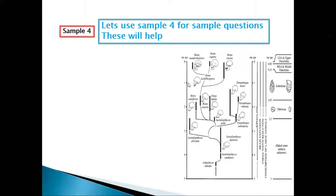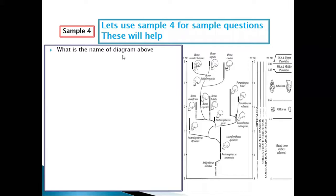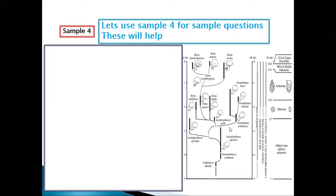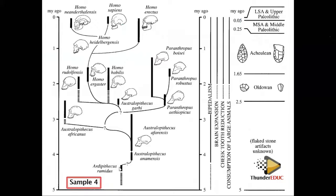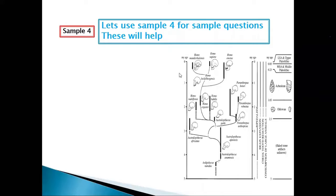Now let's look at the questions. What is the name of the diagram? — Phylogenetic tree. How many genera are shown? Ardipithecus is one, Australopithecus is two, Homo is three, Paranthropus is four — so there are four genera.